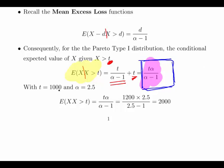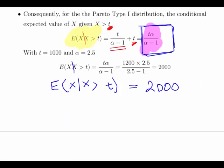In this case with t = 1000 and α = 2.5, the expected value of X given X > t is equal to tα/(α-1) = 2000. I'm going to call that MU because that's the mean of the upper interval.